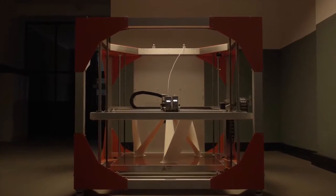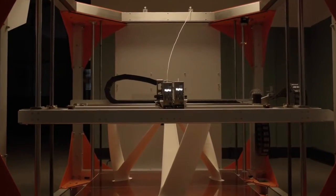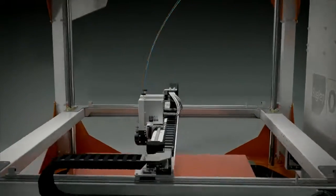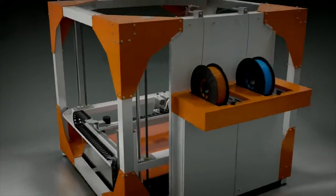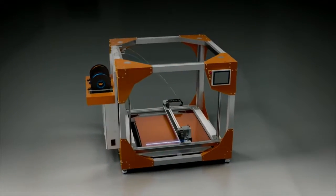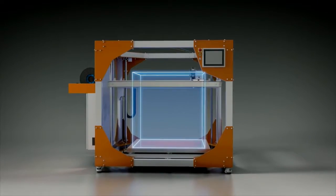Introducing the BIG-REP-1, a revolution in large-scale 3D printing. The ONE's award-winning design is rooted in uncompromising German engineering. Built with a capacity of over 1 cubic meter, the BIG-REP-1 has the largest FDM build volume on the market.